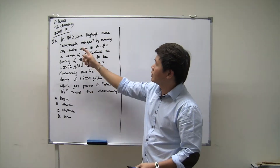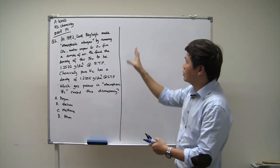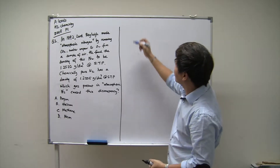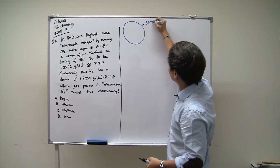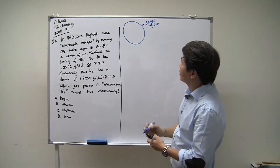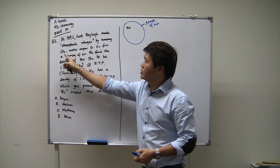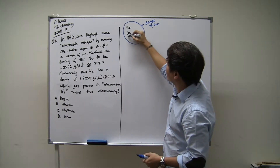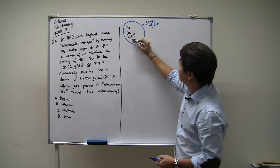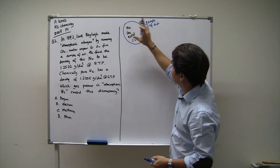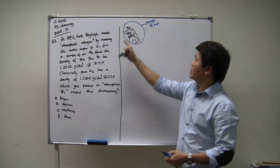Lord Rayleigh tried to make atmospheric nitrogen by removing three components from air. So let me draw out what he's talking about in a simple pictorial form. If this is a sample of air, of course it contains nitrogen and other impurities like carbon dioxide, water vapor — I'm going to use H₂O gas to express water vapor — and oxygen. What he tries to do is take a sample of air and remove these three components, hoping to get pure nitrogen.